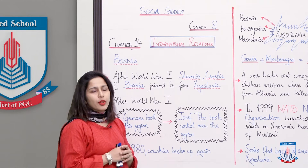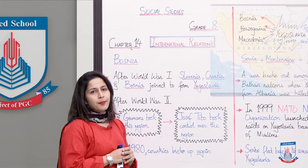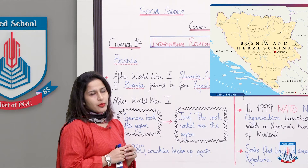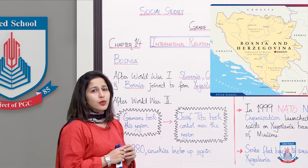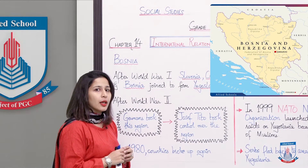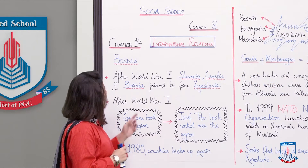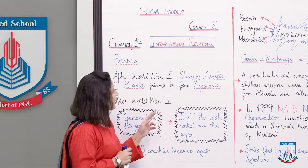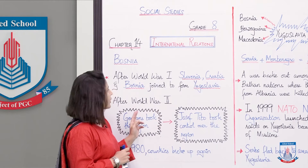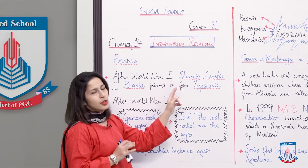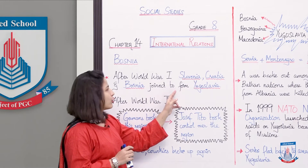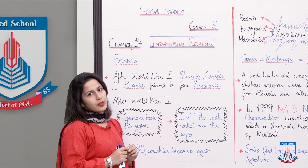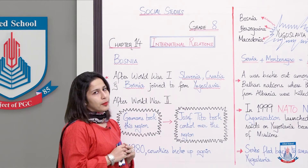Let's go to Bosnia's geographical location. Look at the map and you can just revise the location. Now, what happened in Bosnia after World War I? Slovenia, Croatia and Bosnia itself — three different small countries joined to form Yugoslavia.